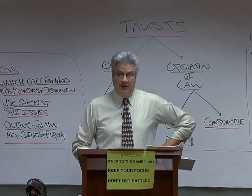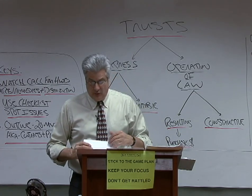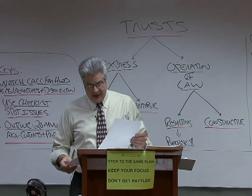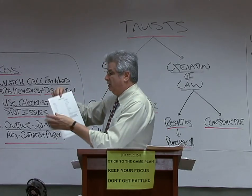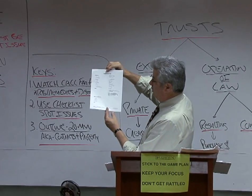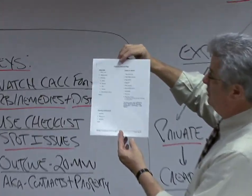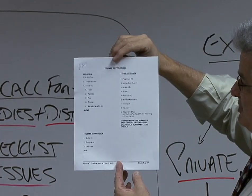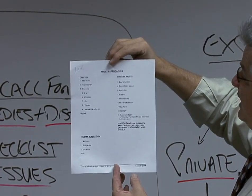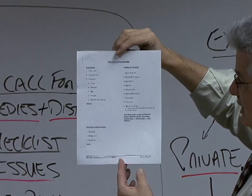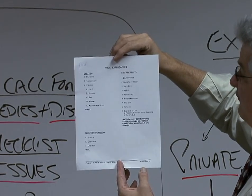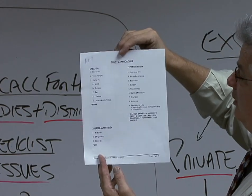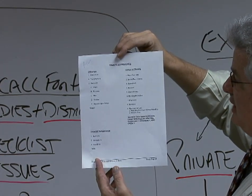The third thing we're going to do is give you approaches. Turn to page 19 of your booklet for today. You'll see that we have something called the trust approaches. We're going to give you an approach to how to create a trust, because most times on an exam you're going to have to do that. We're going to cover different types of trusts — there are about 9 to 11 different types that could pop up depending upon the fact pattern. We're also going to give you an approach for how to write trustee supervision. We call it AOL: authority, obligations, liabilities.